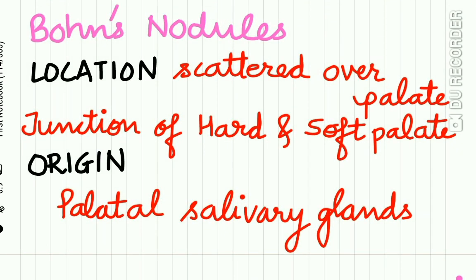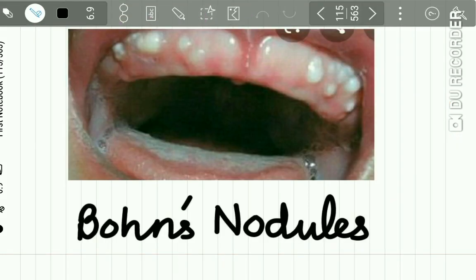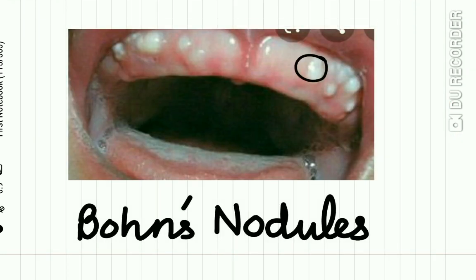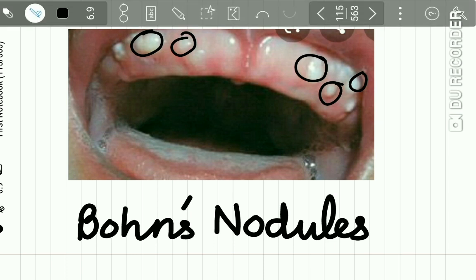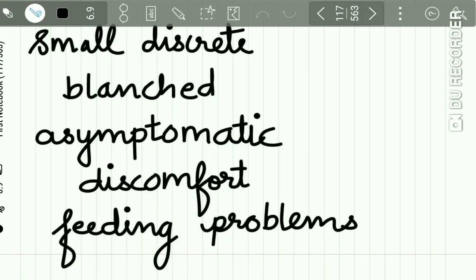Bohn's nodules are scattered over the palate and are mostly seen at the junction of the hard and soft palate, but they also appear on the alveolar ridges. The origin of Bohn's nodules is from palatal salivary gland tissue. Here you can see numerous Bohn's nodules present on the upper alveolar ridge of the patient.